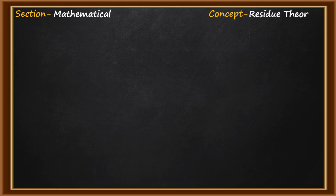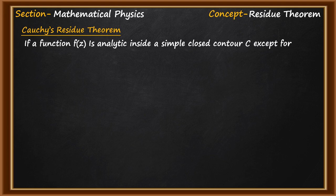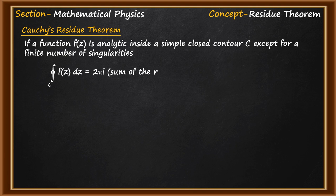This question comes from the section mathematical physics and the concept involved here is the residue theorem. We are given the function z²/sin²(4z) whose contour integral value we have to calculate, and to solve this problem we have to use Cauchy's Residue Theorem. The Residue Theorem states that if a function f(z) is analytic inside a simple closed contour C except for a finite number of singular points, then the contour integral of the function is equal to 2πi times the sum of the residues of the function at all the singularities within the contour.